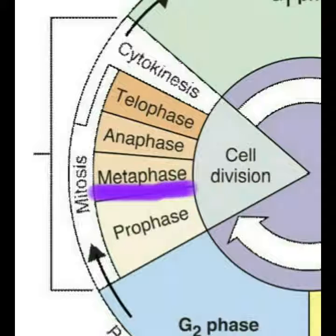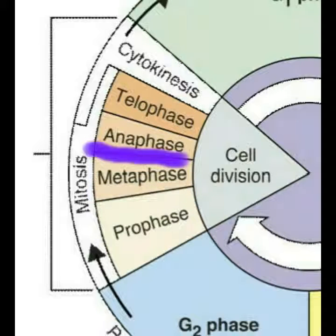Followed by metaphase is anaphase, the third phase of mitosis. During this phase, sister chromatids are allowed to separate and become individual chromosomes.